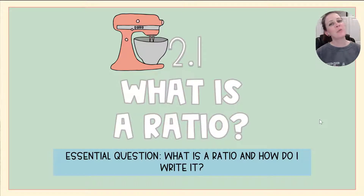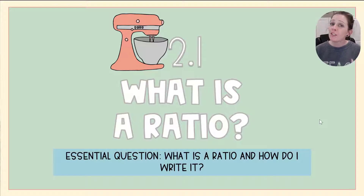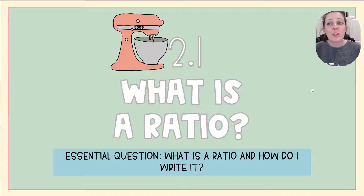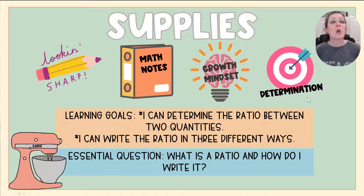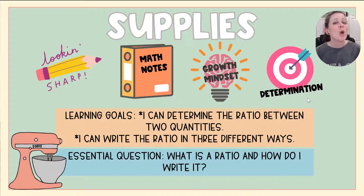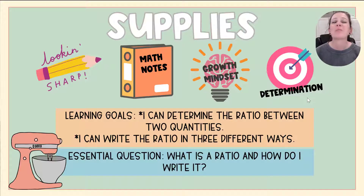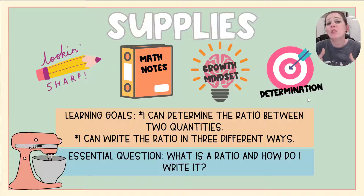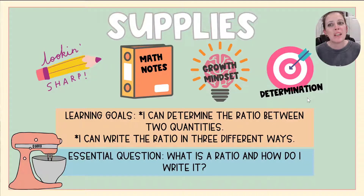Hello, my mathematicians, and welcome to 2.1. Our essential question today is: what is a ratio and how do I write it? We're going to need our writing utensils, our math notebook, a growth mindset, and some determination, because today we have not one but two learning goals. Number one: I can determine the ratio between two quantities. Number two: I can write that ratio in three different ways.